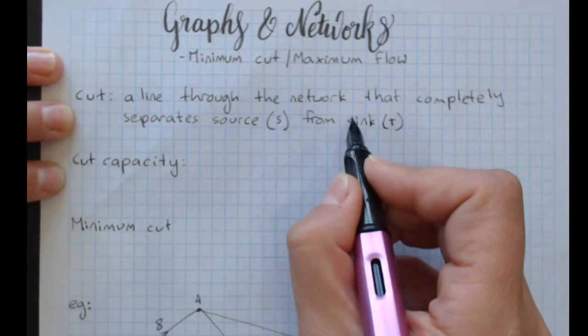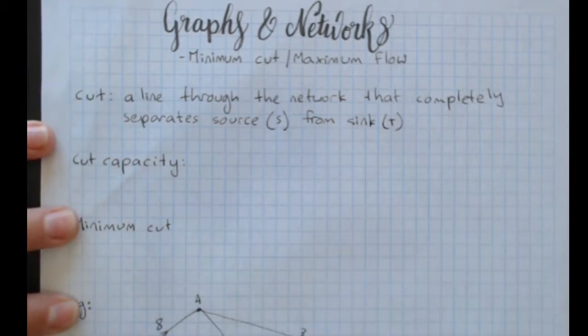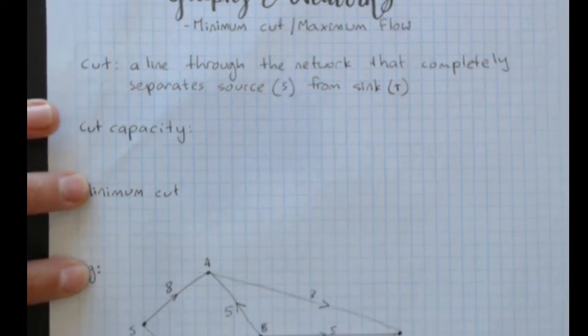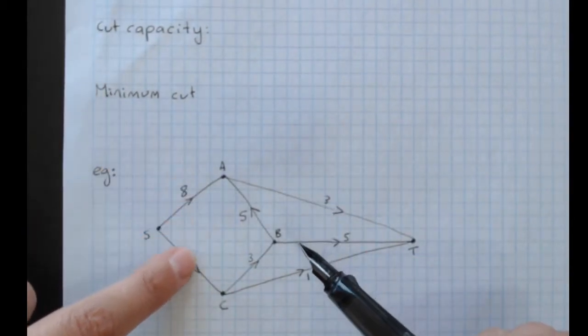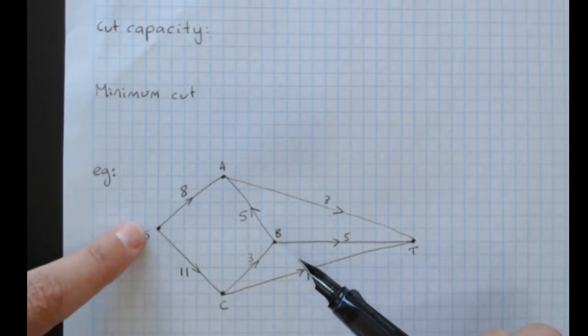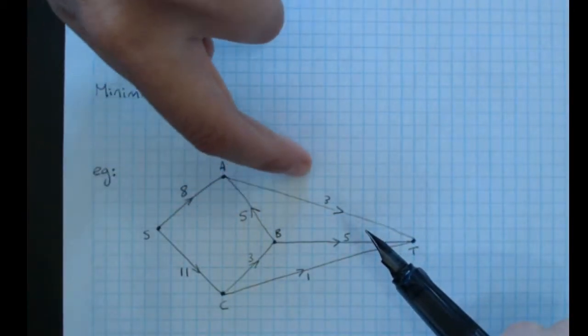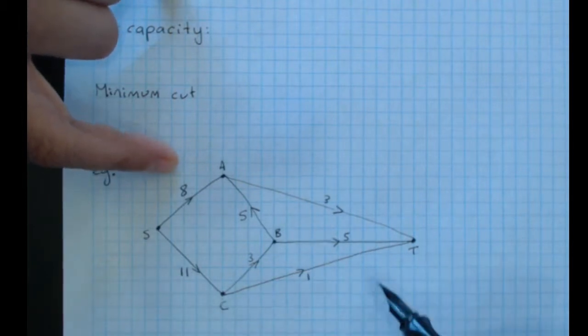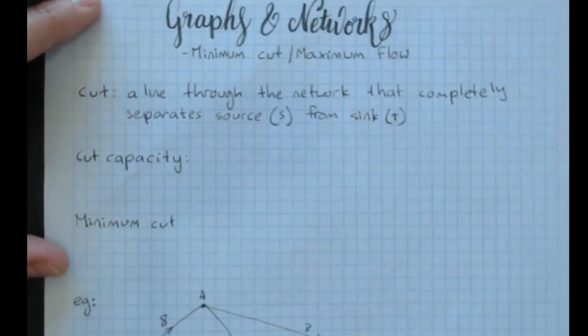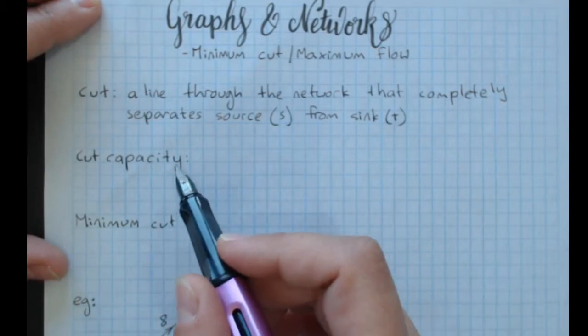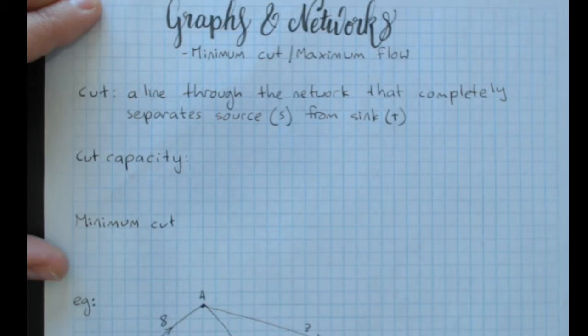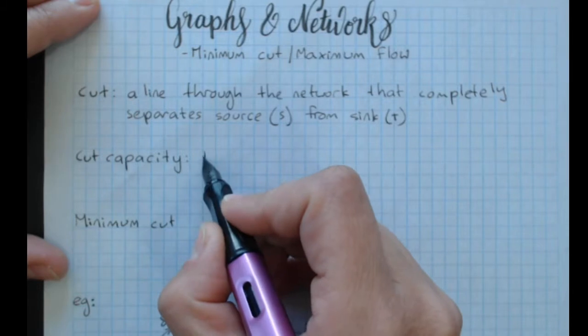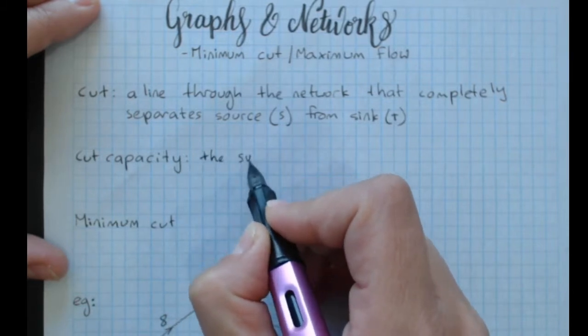Source is where everything's coming from, sink is where everything's going to. They can't both be S, so source is S, sink is T. A cut going through here completely separates the source from the sink. A cut going through here, you can still get flow through, it's not an acceptable cut. Cut capacity is the sum of the capacities of the edges or arcs that are cut. There's a little bit more to it than that.